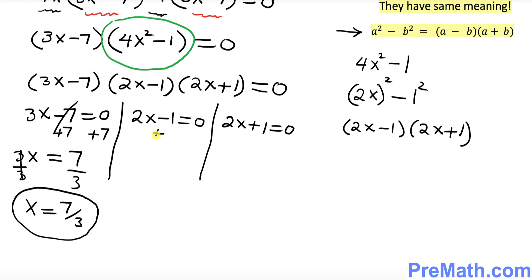Here I want you to add 1 on both sides. So this is gone. So we got 2x equals to 1. Divide both sides by 2. So x turns out to be 1 over 2. And finally, on this case, over here,